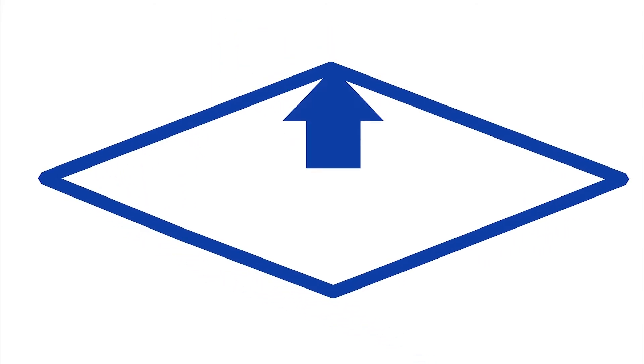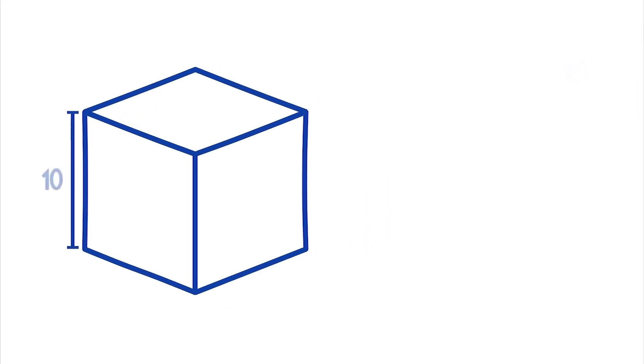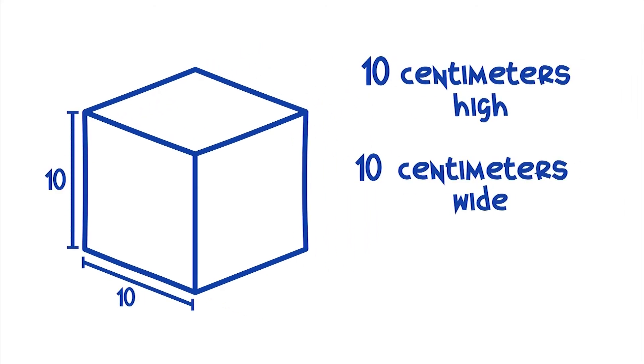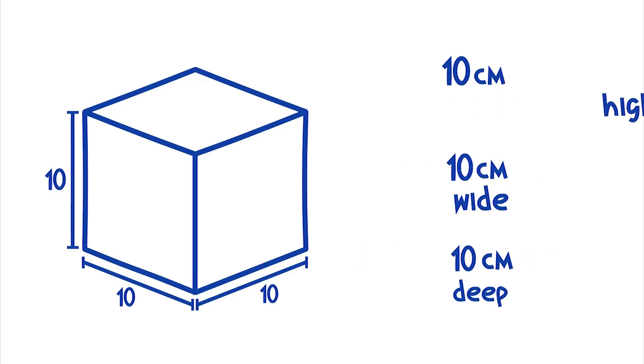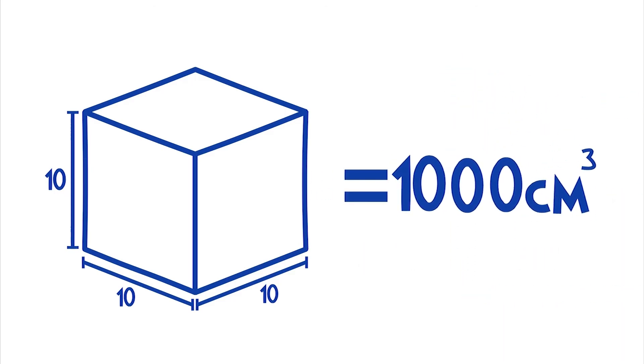Imagine a cube as if we placed a square of paper on the floor and stretched it up until it's high. This cube is 10 cm high, 10 cm wide and 10 cm deep. If it has all these equal measures, we can say then, that this granite has 1000 cubic centimeters.